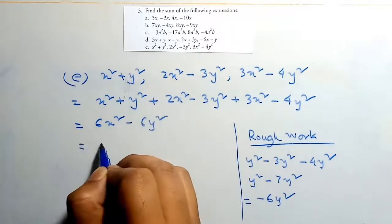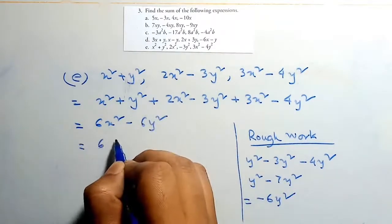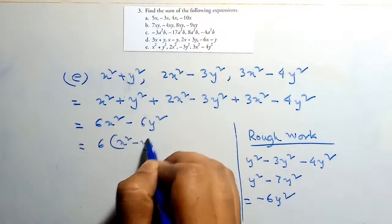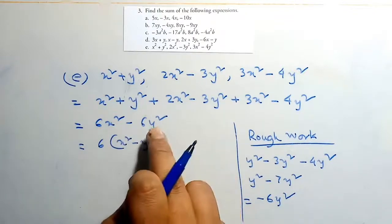When we take 6 as a common factor, the value will be 6(x² minus y²), which equals x² minus y².